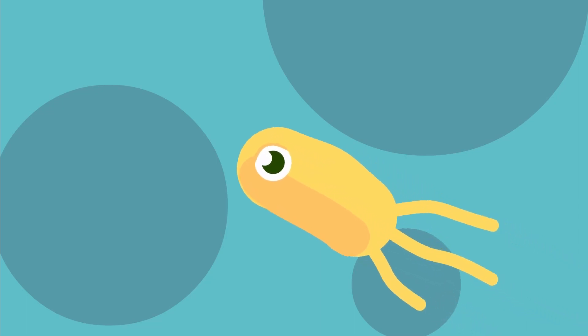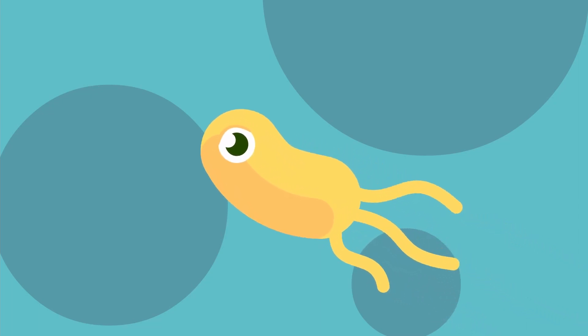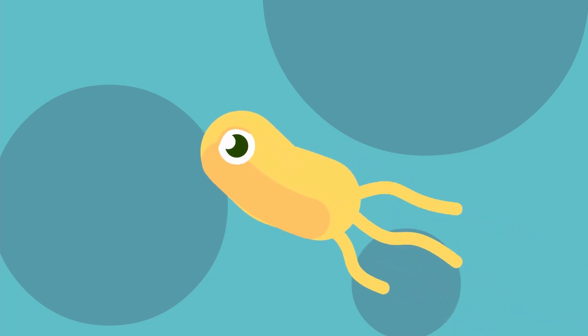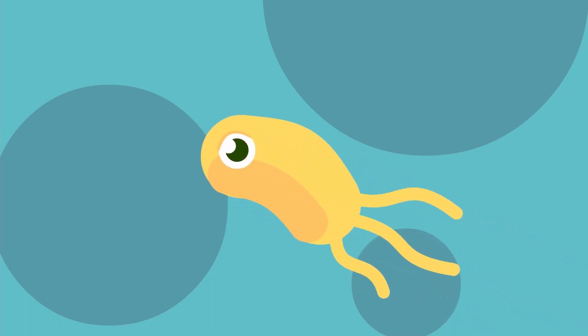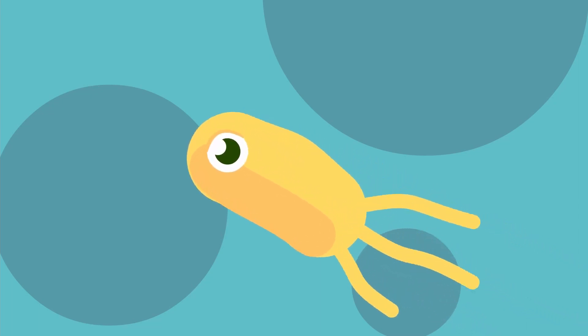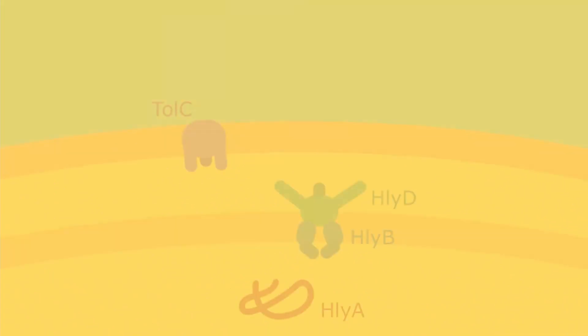Today we're looking at type 1 secretion and we're using E. coli as an example of a bacteria using it.